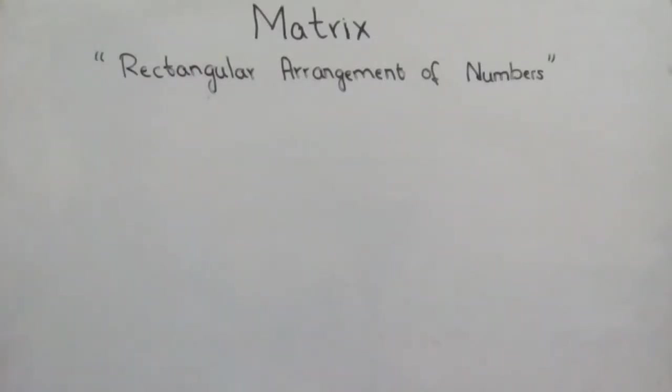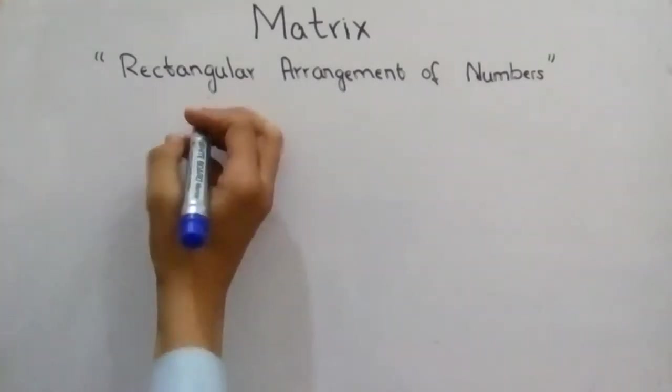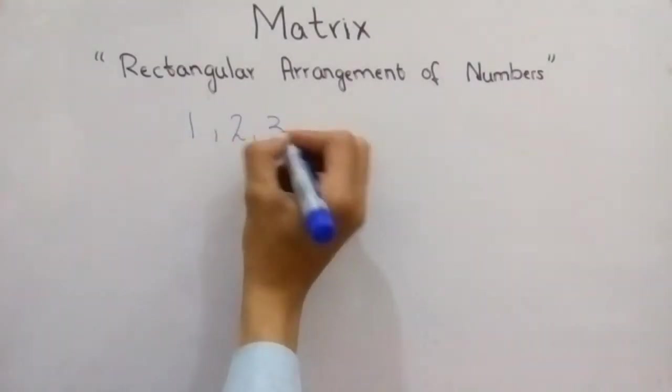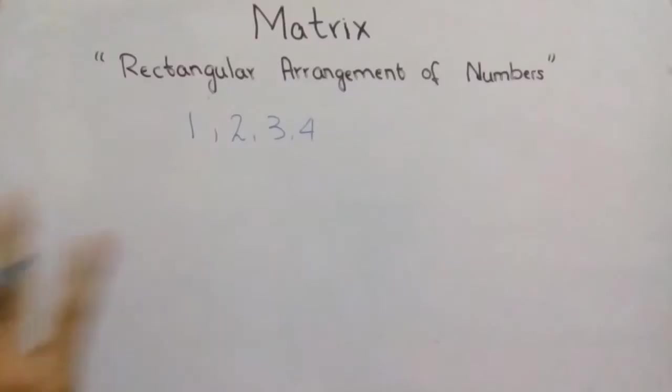Hello guys, today we will talk about matrix. What is a matrix? By definition, a rectangular arrangement of numbers is called a matrix. For example, we have numbers 1, 2, 3, and 4. We have these four numbers we want to arrange.